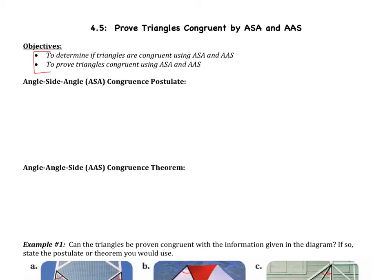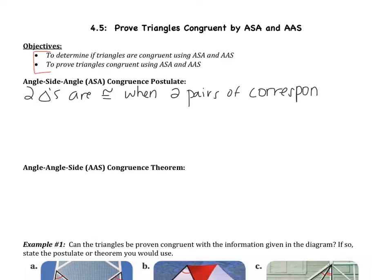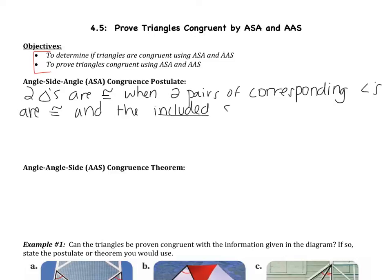ASA, as you can probably guess, stands for angle-side-angle. ASA says that two triangles are congruent when two pairs of corresponding angles are congruent and the included sides are congruent.